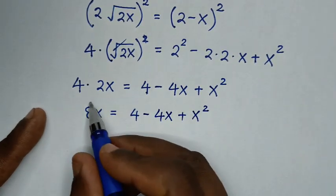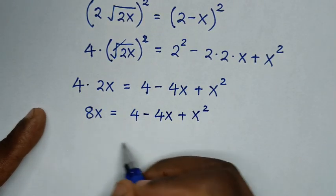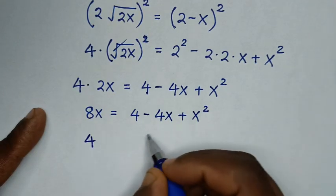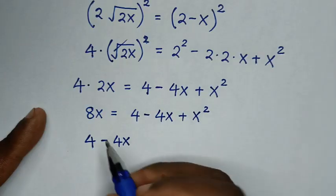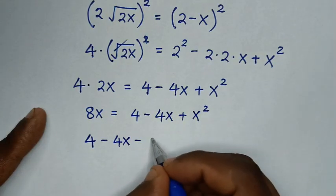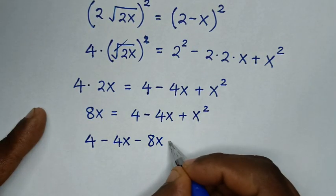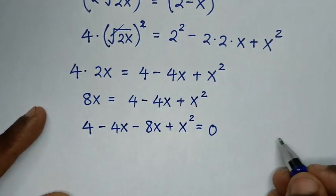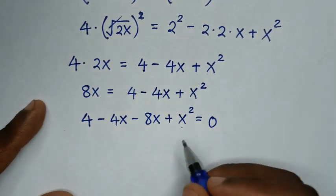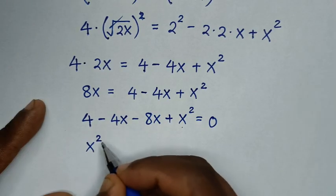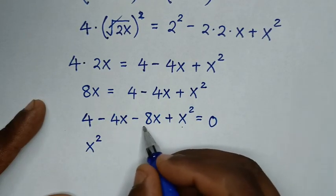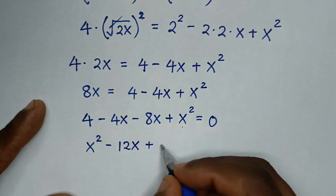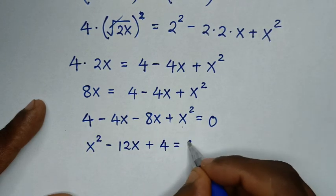We take 8x to the right side. So we have: 4 − 4x − 8x + x² = 0. Combining like terms: x² − 12x + 4 = 0.